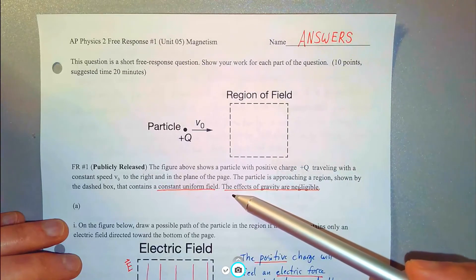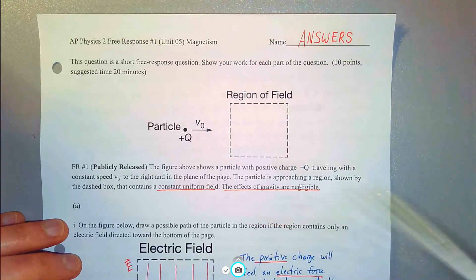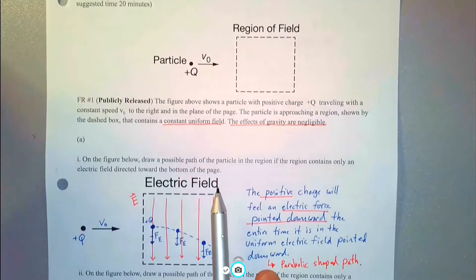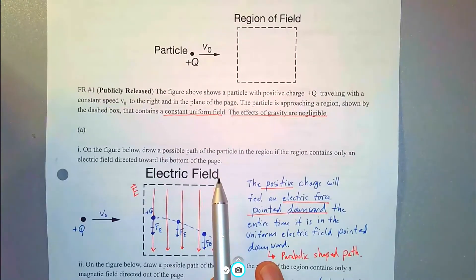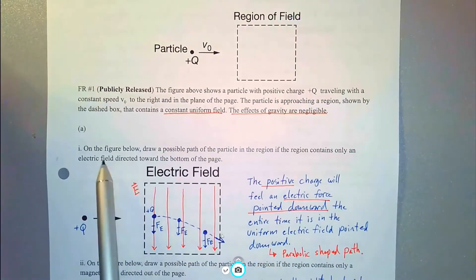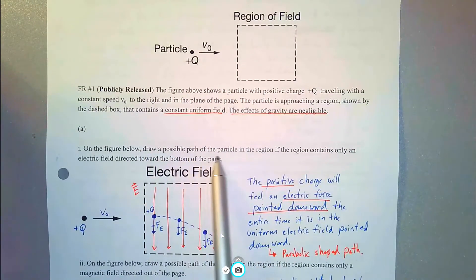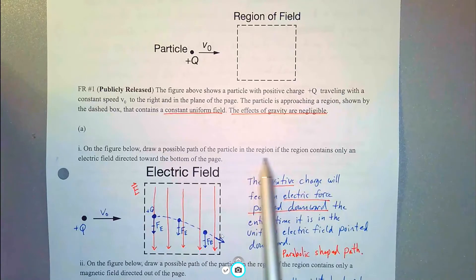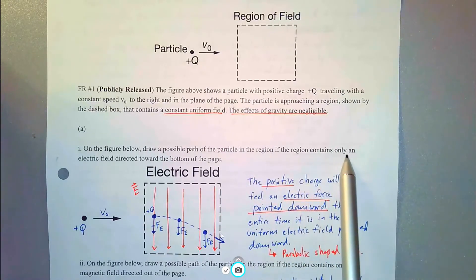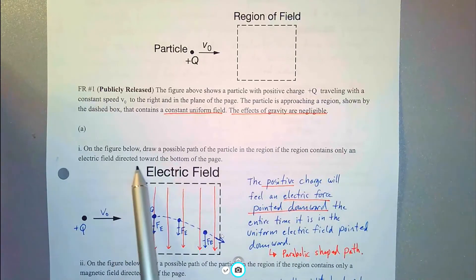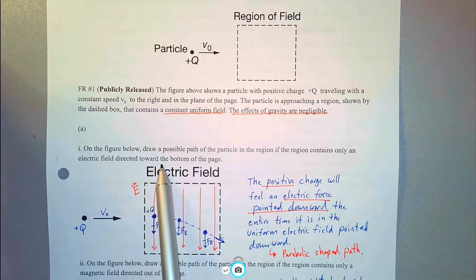The effects of gravity are negligible. The first part of part A says: on the figure below, draw a possible path of the particle in the region if the region contains only an electric field directed down towards the bottom of the page.